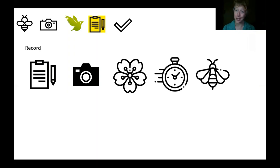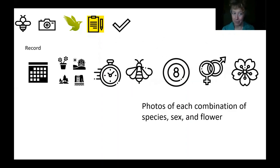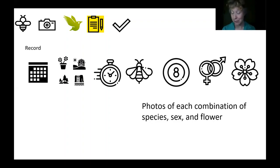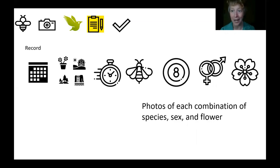To summarize: print some data sheets if you're going to be using them, grab your camera, scout out some flowers in your backyard or park, record your start time, and photo bees and record them on the data sheet. The information you're recording for these observations is your date, location, land cover, species of bees, number of bees, the sex of those bees, and the plant. We're looking for a photo of each combination of species, sex, and flower that you encounter during any one observation — whether that's 10 to 15 minutes, half an hour, or however long you're spending at your site.